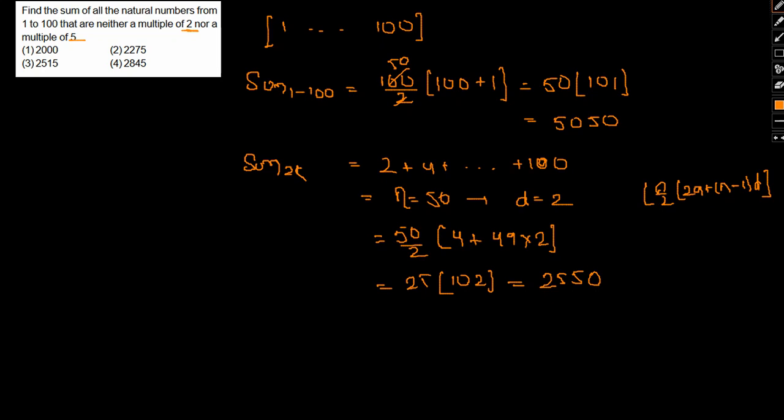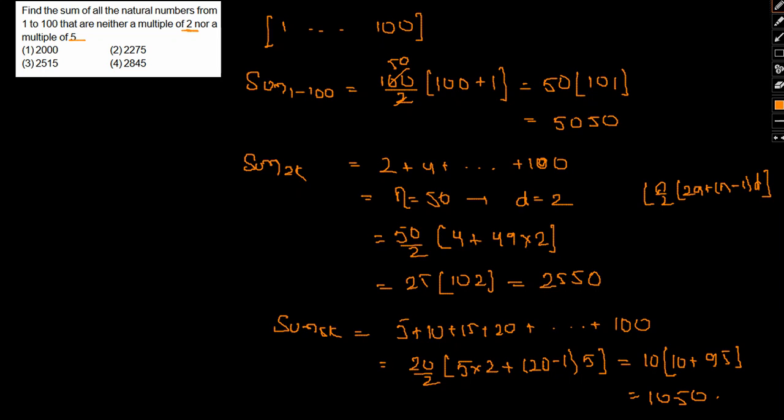For multiples of 5, the numbers are 5, 10, 15, 20, ... plus 100. There are 20 such terms. Using the same formula: 20/2 times (2 times 10 plus (20-1) times 5). This is 10 times (10 plus 95), which equals 10 times 105, which is 1050.